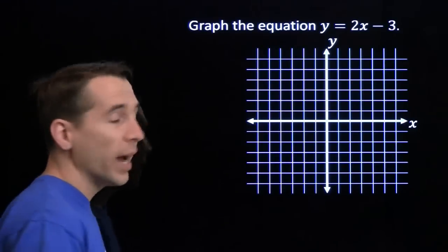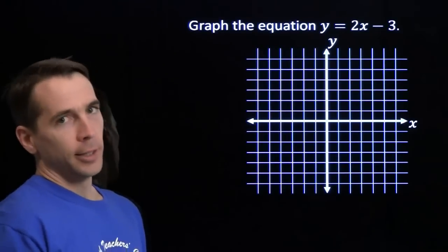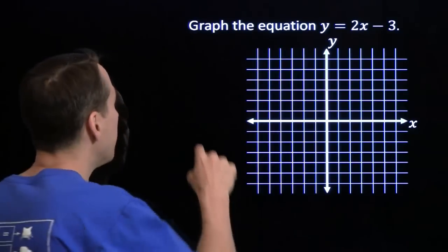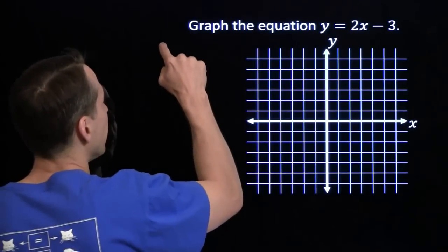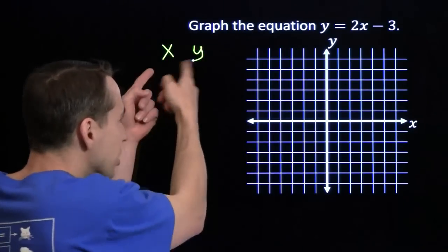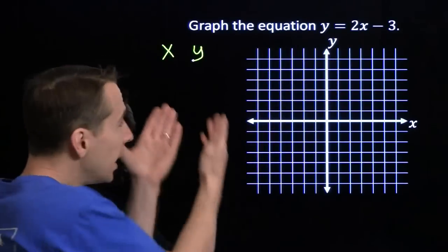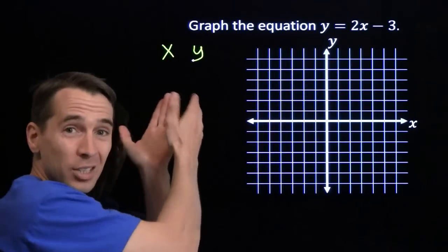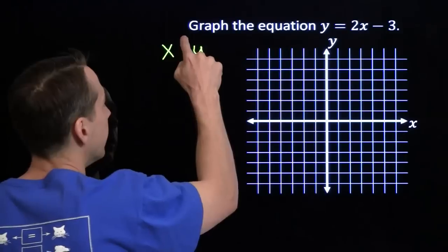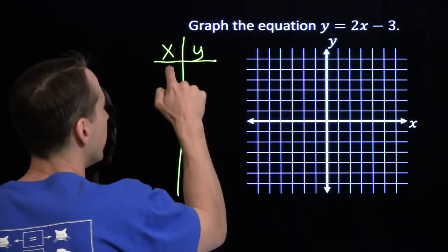We're going to graph the equation y equals 2x minus 3. I've got to tell you what 'graph the equation' means first. That means we're going to find all the values x, y such that x and y satisfy this equation. Then we're going to plot each of those points x, y in this plane right here. I'm going to keep track of the points we find in the little table over here.